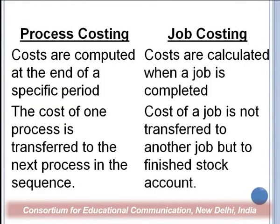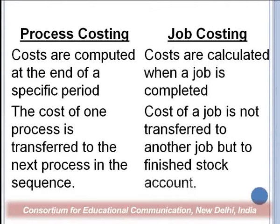In process costing, costs are computed at the end of a specific period — it may be monthly, every six months, or end of the year, because the production is of continuous nature. But in job costing, costs are calculated when a job is completed. You keep getting orders and doing the work, and at the moment you complete each job, the cost of that order is calculated.